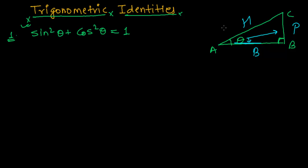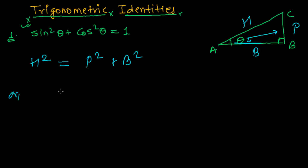Now let's apply the Pythagorean theorem to this triangle. According to Pythagoras, in any right angle triangle, the hypotenuse square always equals the sum of the perpendicular square and the base square. So let me write: AC² equals BC² plus AB².